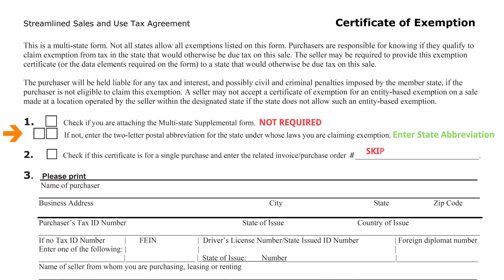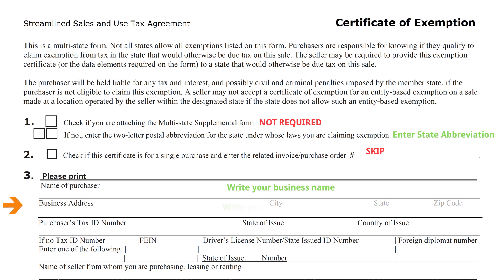Please skip Section 2 and move to Section 3. Please keep in mind that all information should match what you registered with. Under name of purchaser, write your business name. Under business address, write your physical business address, as we do not ship to PO boxes. Under purchaser's tax ID number, write your purchaser tax ID number.